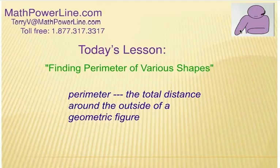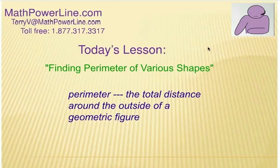Hi, and thanks for watching this video. We're going to be talking about finding the perimeter of various shapes. It's a pretty easy concept, but a lot of times perimeter is mixed up with area. The area inside of, say, a square, a rectangle, a triangle, whatever the shape is, is the space inside. But perimeter is the total distance around the outside of the geometric figure.